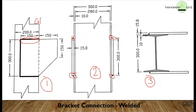Coming to the top view, the profile of your I-section flanges can be made rectangular in the exam. While showing the weld, you are not supposed to show anything other than a triangle for the fillet weld. The thickness of the weld — whether it is 8 mm or 10 mm — has to be clearly mentioned. So this completes our bracket connections. Next we will move on to column bases.